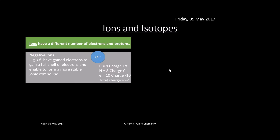Let's look at ions and isotopes — you've got to know the difference. Ions have a different number of electrons and protons, so they don't have equal amounts like in a neutral atom. For example, O2 minus has gained two electrons to get a full stable shell. We have eight protons giving a charge of plus eight, eight neutrons with no charge, and ten electrons, giving it a minus two charge overall.